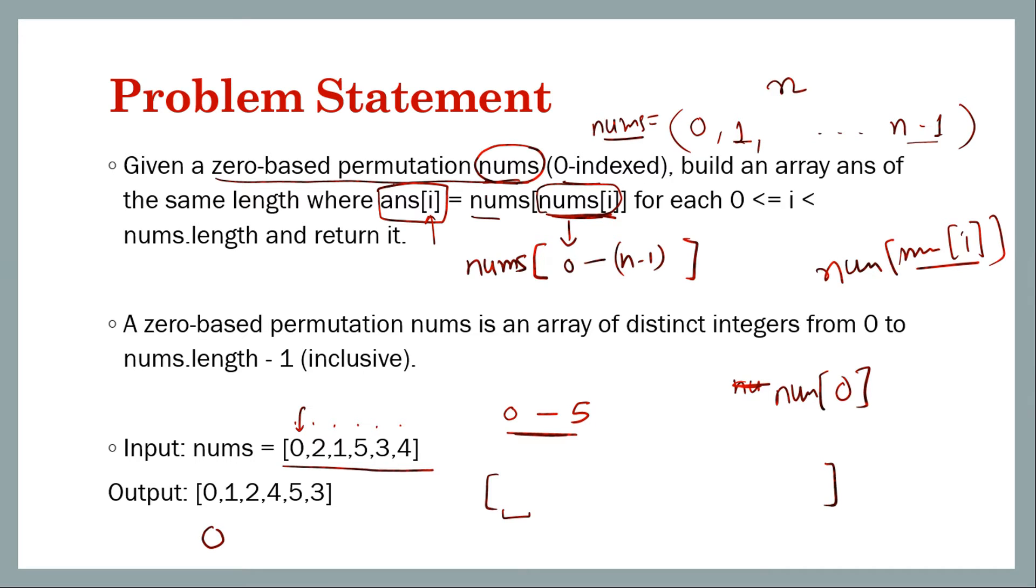At index one, it will be nums[nums[1]]. What is nums[1]? It's two. So replace this with two. Nums[2] is one, so then it should be one. Similarly, you can do this for all the other elements.